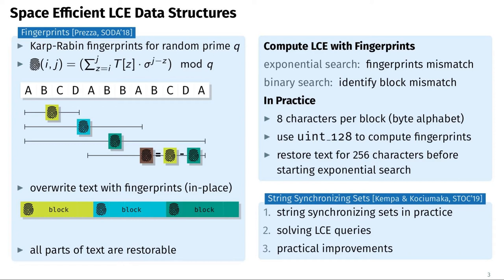Now let us focus on our second approach, because the fingerprint approach was already introduced by Pretzer and our implementation only provides improvements regarding construction time. Our second data structure for longest common extensions is based on string-synchronizing sets, which were recently introduced in a theoretical paper by Kemper and Kochiwamaka tackling the LCE and sparse suffix sorting problem. We now show how to use string-synchronizing sets in practice and present some practical improvements.